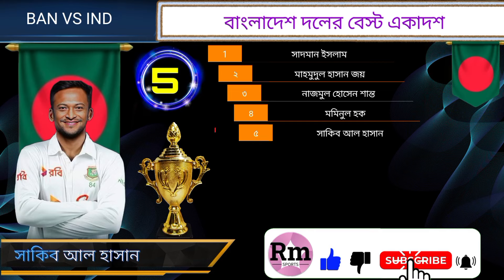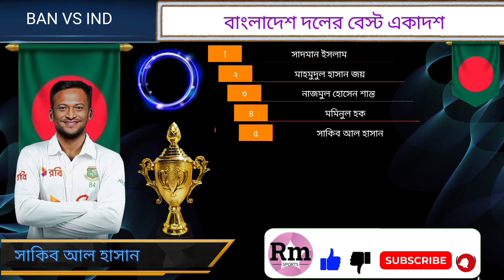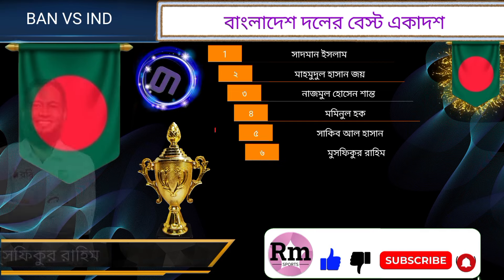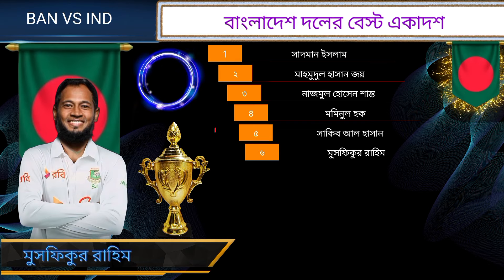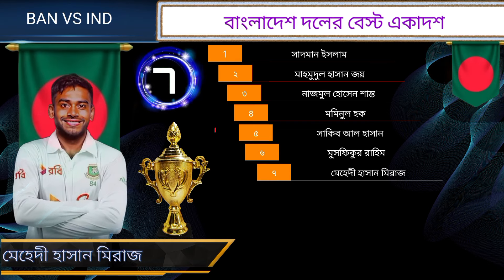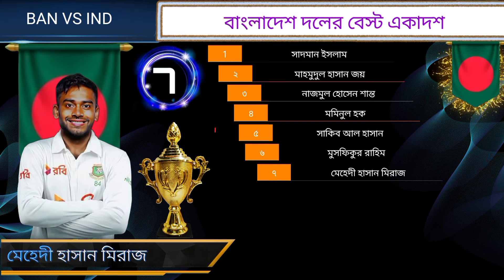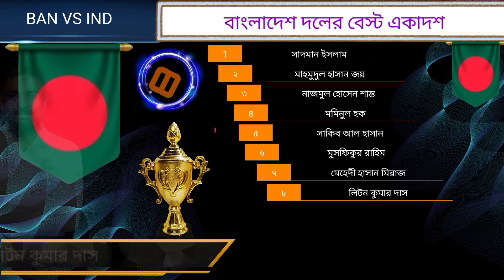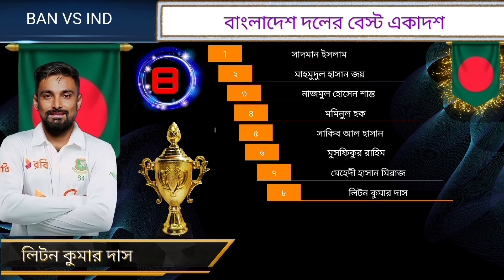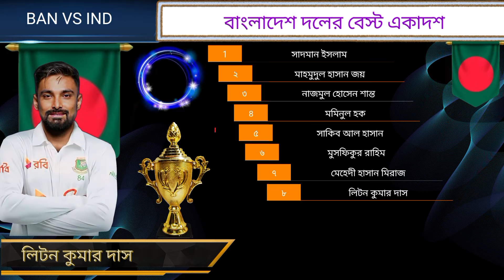Number 5, Sakim Al-Hasan, batting all-rounder. Number 6, Muspikur Rahim, wicket keeper batsman. Number 7, Mehdi Ashan Mirias, bowling all-rounder. Number 8, Litten Kumardash, wicket keeper batsman.